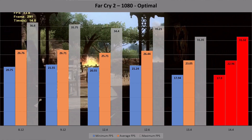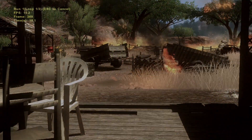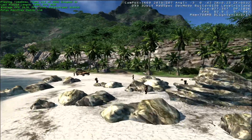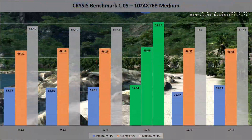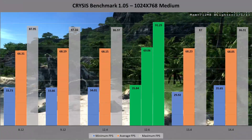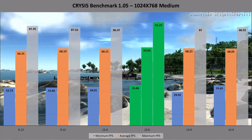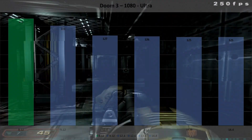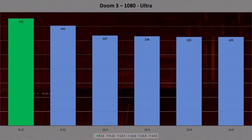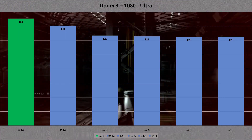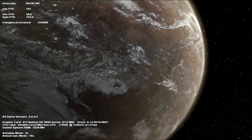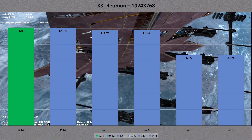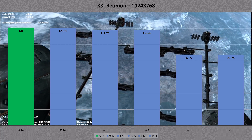I've just highlighted the 14.4s to show that they were the worst. Crysis needs to be included, of course — at medium settings at 1024x768, the 12.6 drivers take the top spot for minimum, average and top FPS scores. The other drivers are all roughly similar, with the exception of the 13.4 drivers having the lowest minimum frame count. In Doom 3 at 1080p ultra settings, the 8.12s again destroy their closest competitor, being 10 FPS faster than the next oldest drivers, with the other drivers having about two frames difference between them. In the X3 Reunion benchmark, it continues a growing trend of the oldest drivers running fastest — being some 30 FPS faster than the newest drivers, with the 9.12s coming in a close second.